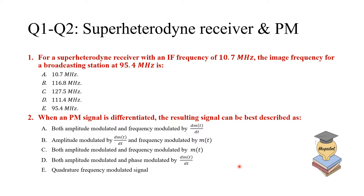Now we are ready to show the answers for part one and part two. If you haven't finished, you can pause the video. For question one, the answer is 116.8 MHz. That's two times the intermediate frequency plus the station frequency — two times 10.7 MHz is 21.4, plus 95.4 MHz gives you the answer.